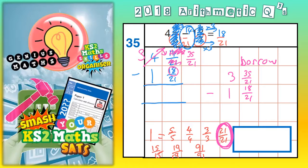Now once you've got it as a column method, with a bigger number on the top and common denominators, you can just do it like a normal column method.